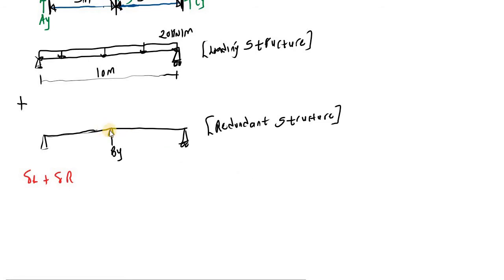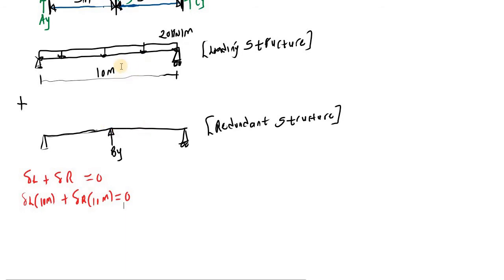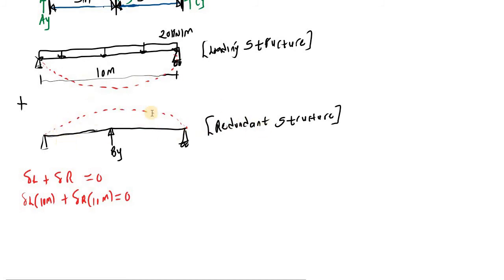There will be no vertical deflection at B, so the sum equals zero. The deflected shape for the loading structure displaces downward — giving a negative displacement — while the redundant structure displaces upward — giving a positive displacement. To get the deflection values, we use the beam deflection chart. For the loading structure we get a negative displacement, and for the redundant structure a positive displacement, both at a distance of 10 meters.